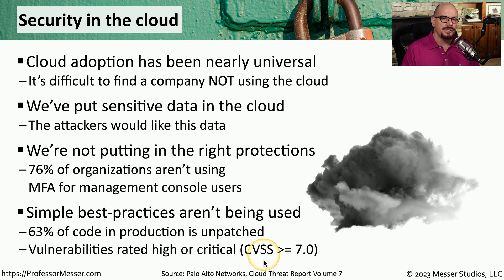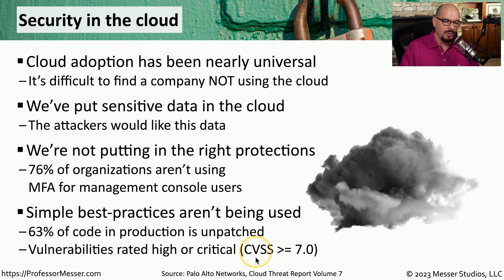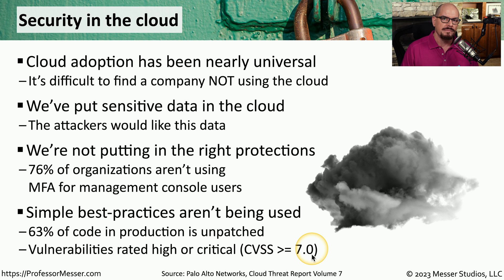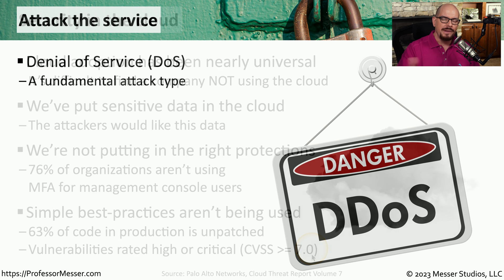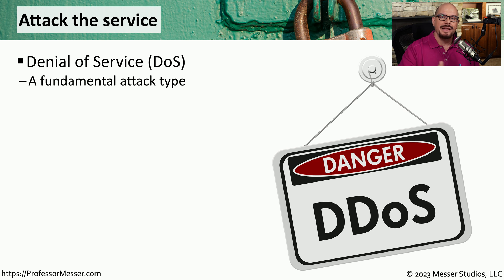These are not minor patches either — these are significant security concerns. And in some cases, these vulnerabilities have a Common Vulnerability Scoring System, or CVSS, that is greater than or equal to 7 on a scale of 10. If you have an application that's in the public cloud, then anyone in the world would be able to at least attempt to connect to that particular application. That is the point of putting your applications in a public cloud.